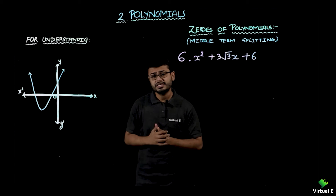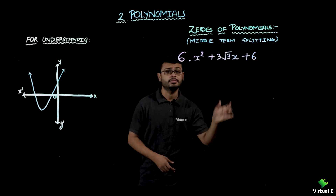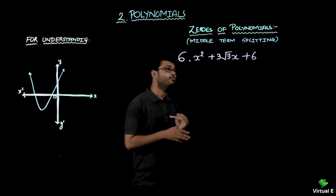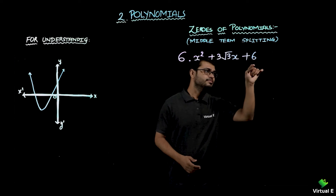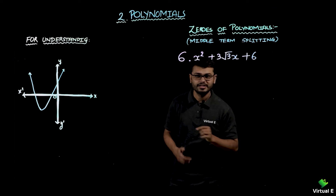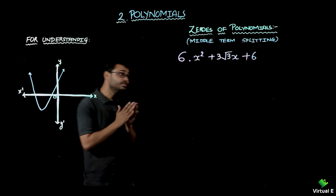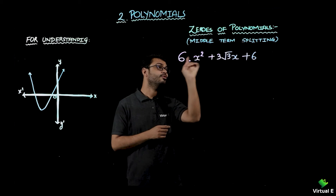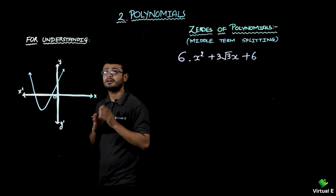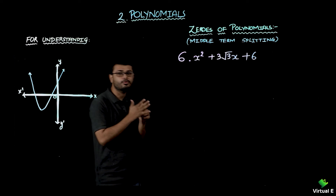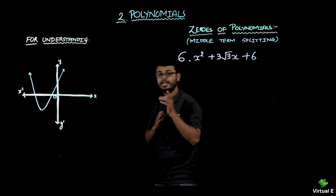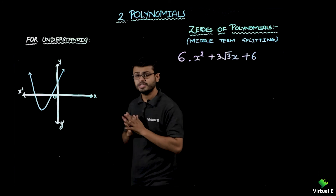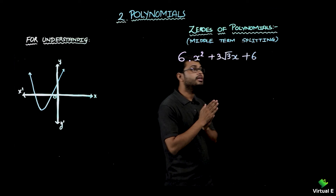Now let's discuss another case with square root. In the previous case, square root was on the first term and constant term. But in this new case, the square root is in the middle term. Whatever product we should get is 6 and the sum should be 3√2. We need to think something different here.